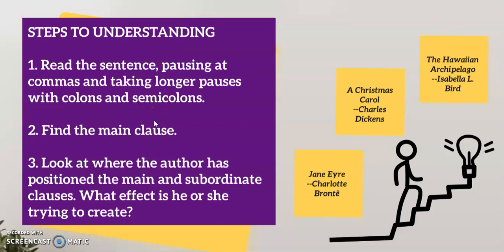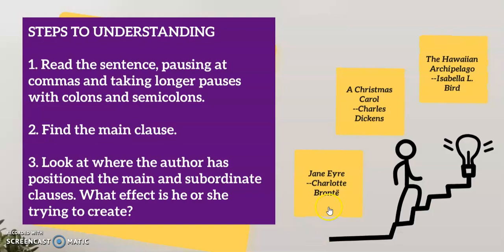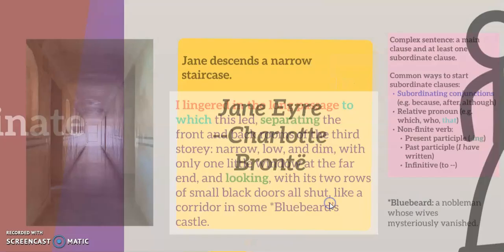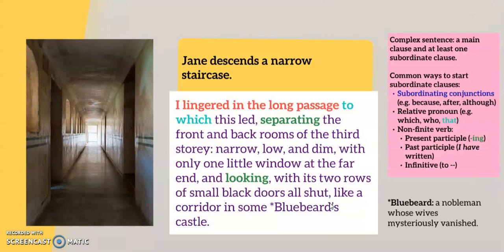Here we have a summary of steps to understanding a sentence. Number one: read the sentence, pausing at the commas and taking longer pauses with colons and semicolons. Number two: find the main clause. Finally, number three: look at where the author has positioned the main and subordinate clauses. What effect is he or she trying to create?